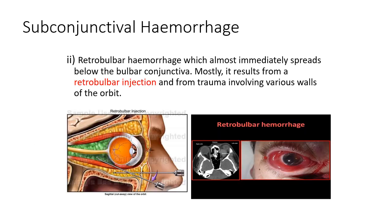In this picture you can see retrobulbar hemorrhage that almost immediately spreads below the bulbar conjunctiva, resulting from a retrobulbar injection. In peribulbar block, the injection is around the globe, whereas in retrobulbar injection, the needle enters the muscle cone. In peribulbar block, there is less chance of hemorrhage, which is why it is preferred.